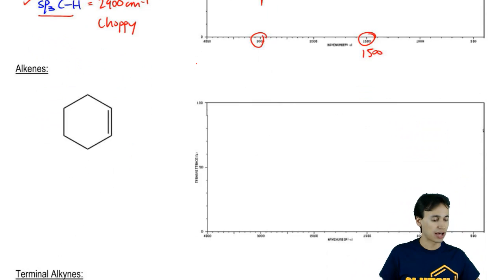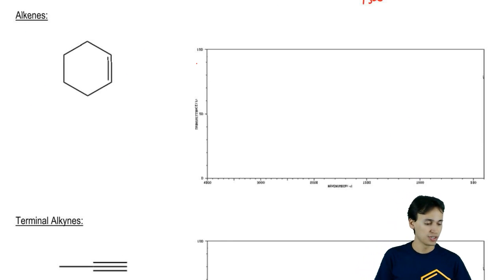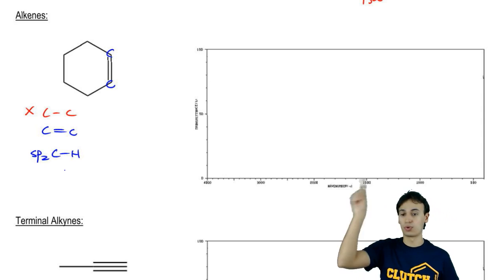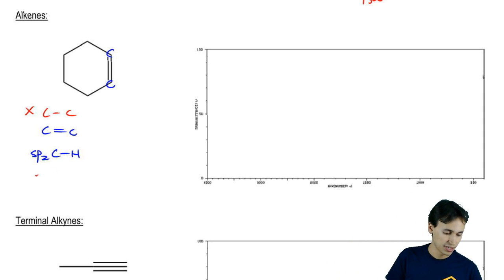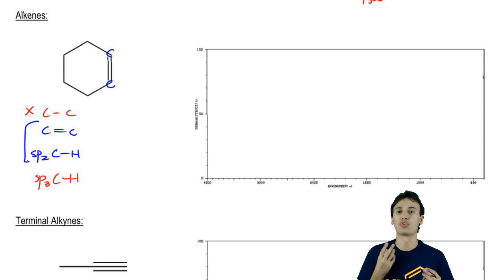Let's move on to our second situation, which is alkenes. Now notice that alkenes had more that we had to worry about because we still have that CC, which we're not going to draw. But now we had two different peaks that we have to draw. We had the C, double bond C, which is here and here. And we also have the SP2CH. So that's in addition to the rest of the hydrocarbon that still has SP3CH. So what I'm trying to say here is that we've got these two extra peaks that we have to worry about that are complicating this more than just a regular alkane.